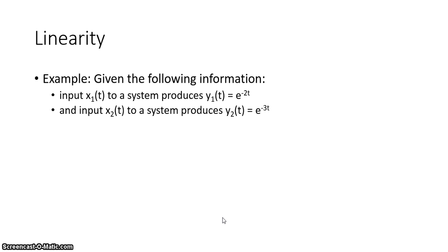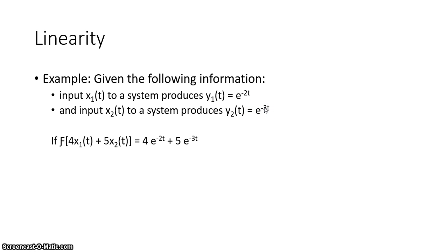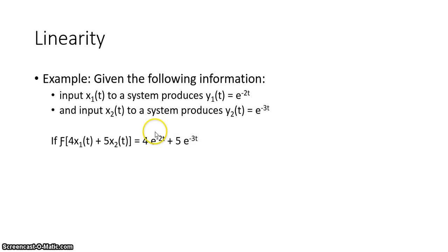Let's take a look at an example. If input x1(t) produces output y1(t) equal to e raised to the negative 2t, and input x2(t) produces output y2(t) equal to e raised to the negative 3t, then passing 4·x1(t) plus 5·x2(t) through a linear system gives an output of 4·e^(-2t) plus 5·e^(-3t).